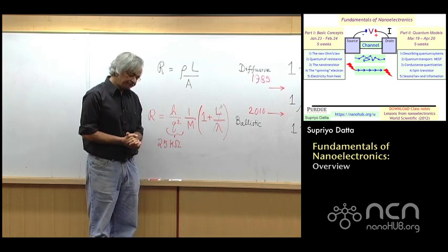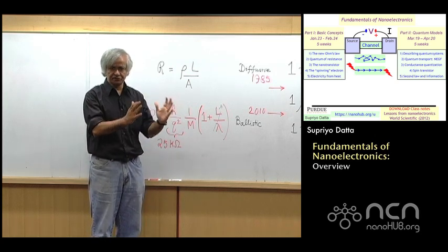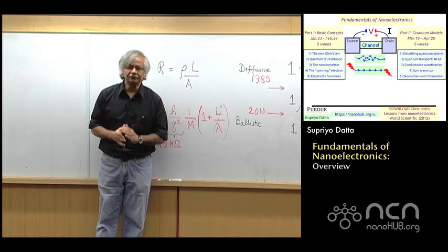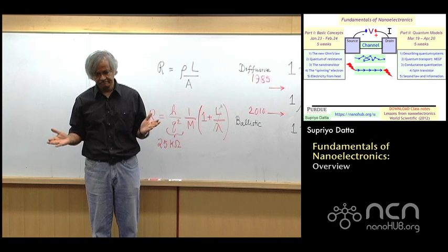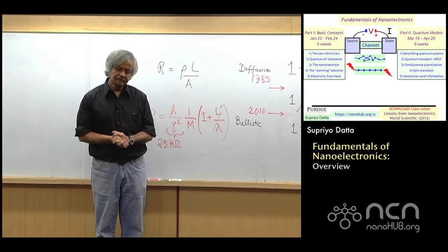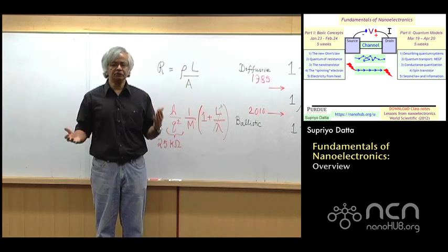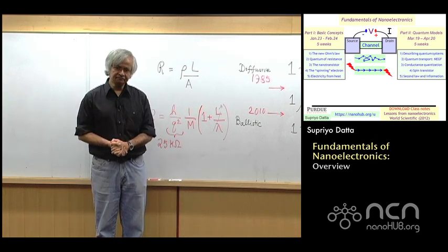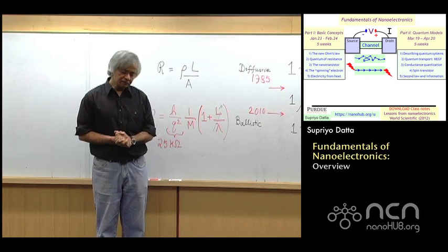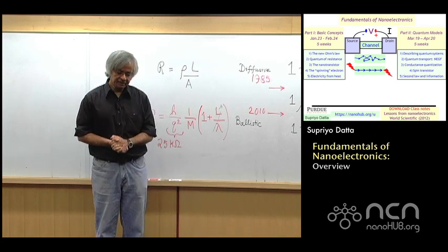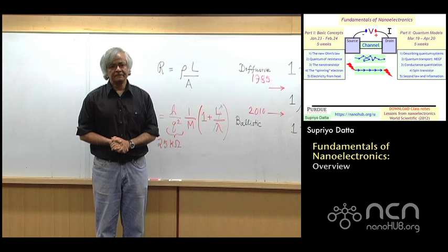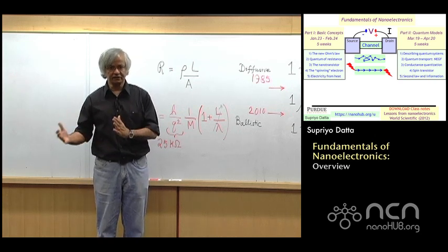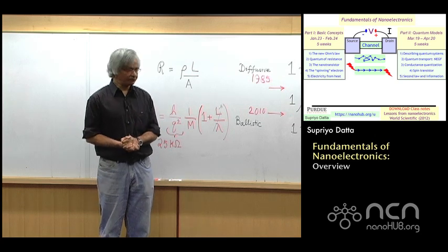In the other three weeks that we are talking about the first part of the course, the subsequent three weeks, we talk about three types of important devices. One is the nanotransistor, second is the whole new class of devices that's based on the spin of the electron, which I'll explain and we'll talk about. And thirdly, devices that allow you to convert waste heat into electricity. That is another class of important devices of interest.